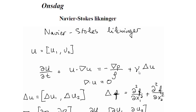The Navier-Stokes equations are written in vector form in this way. This u, which is a vector of two components — one in the x-direction and another in the x2-direction — will satisfy this equation. We note that this Laplacian of this vector function u, which is the velocity field in the x-direction and the y-direction, can be written as the following vector.